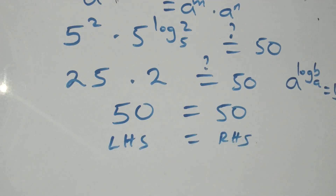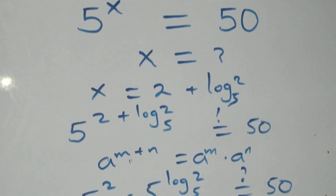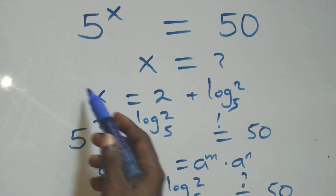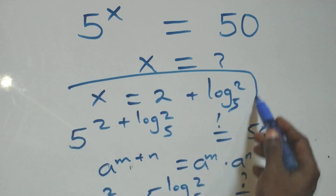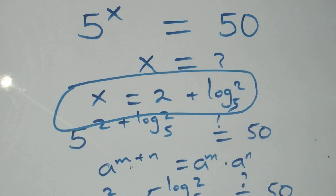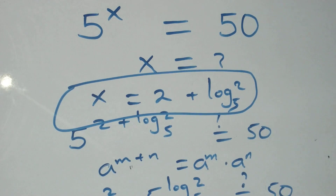Therefore, we conclude that x = 2 + log₅(2) satisfies the given problem. Thank you for watching — don't forget to subscribe for more videos, turn the notification bell on, share this video, give it a thumbs up, and put your comments. See you next class!